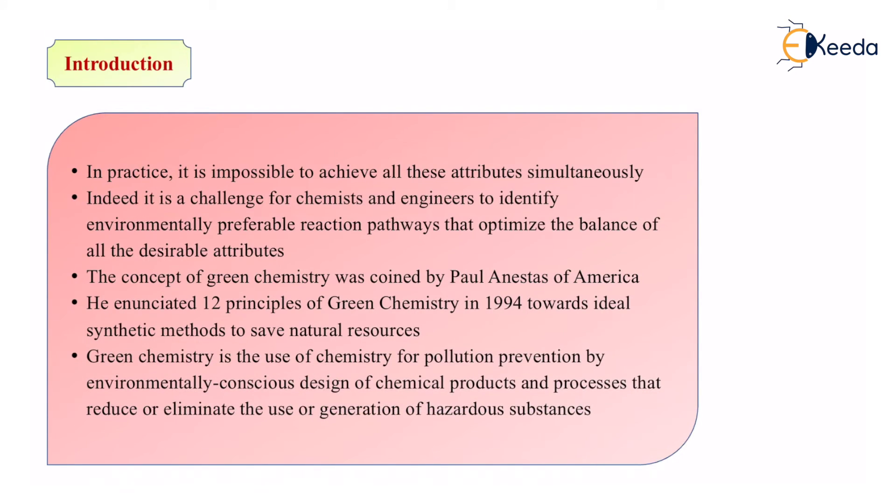Green chemistry is the use of chemistry for pollution prevention by environmentally conscious design of chemical products and processes that reduce or eliminate the use or generation of hazardous substances. When Paul gave us the 12 principles of green chemistry, what he was trying to say was, it is a chemistry for pollution prevention. It helps us to prevent pollution. How can we prevent pollution? By designing our chemical products in such a way that they are environmentally friendly or environmentally conscious.